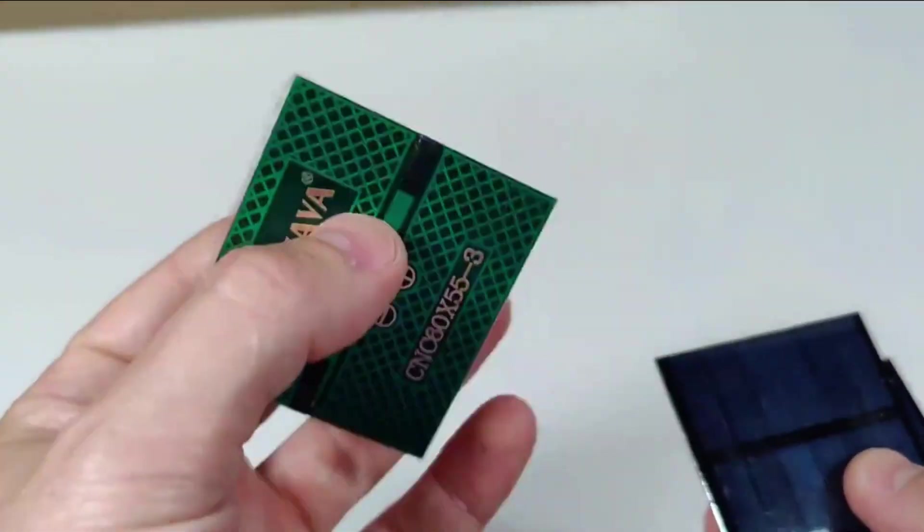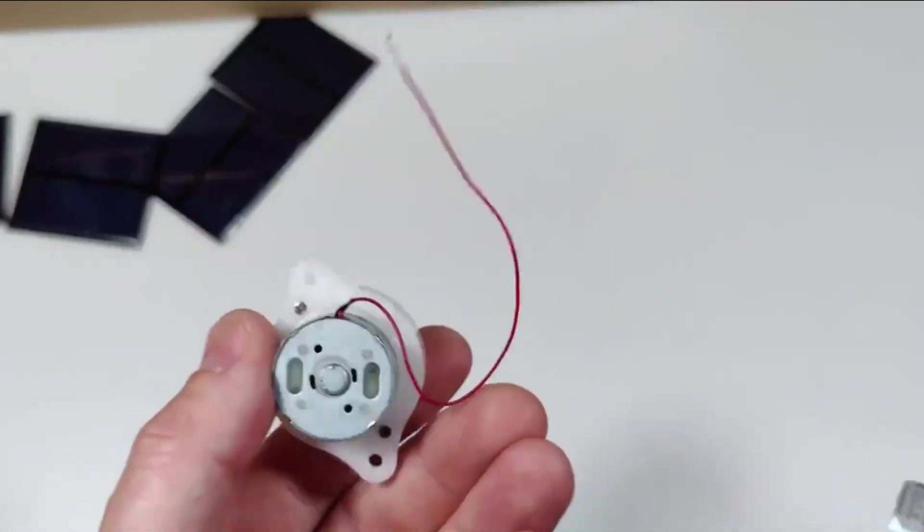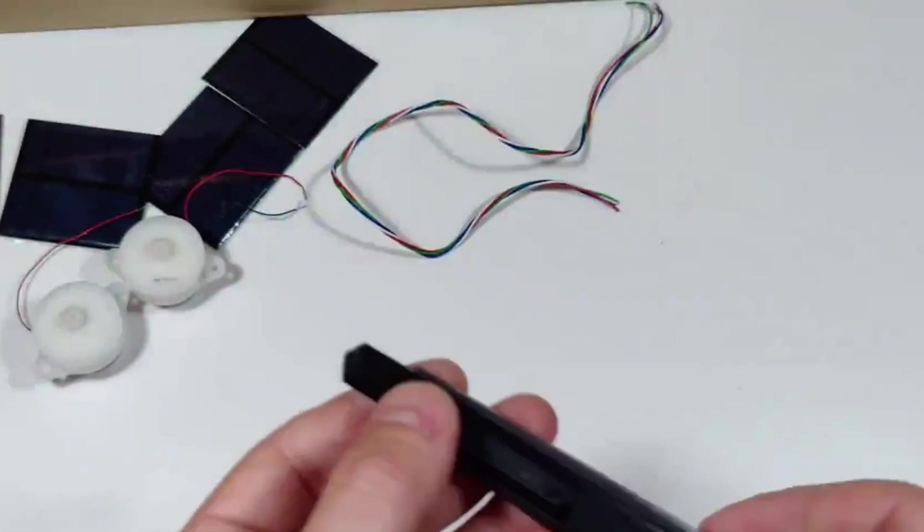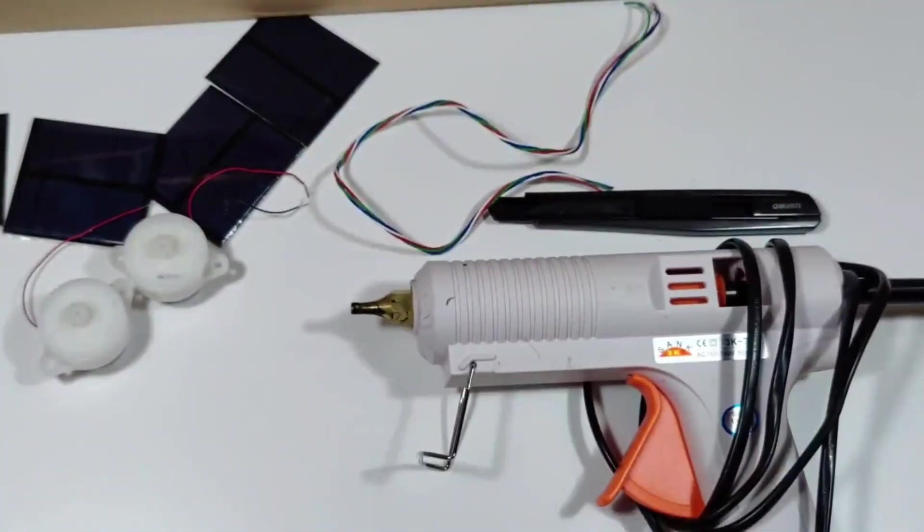Here are the materials you'll need. A cardboard box to make the frame, four 5-volt 150 milliamp solar panels, two 6-volt DC motors with gearboxes, some power wires, a knife, a hot glue gun, and a soldering iron.